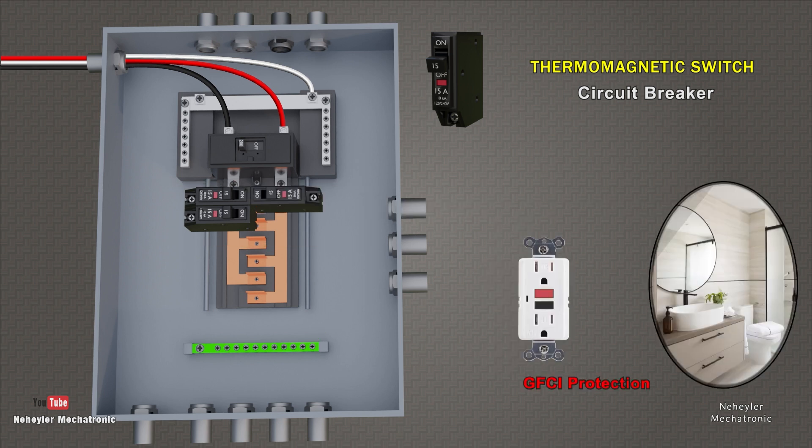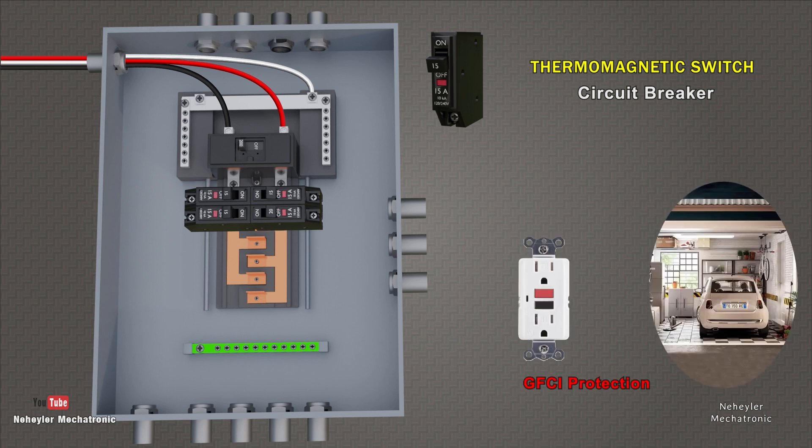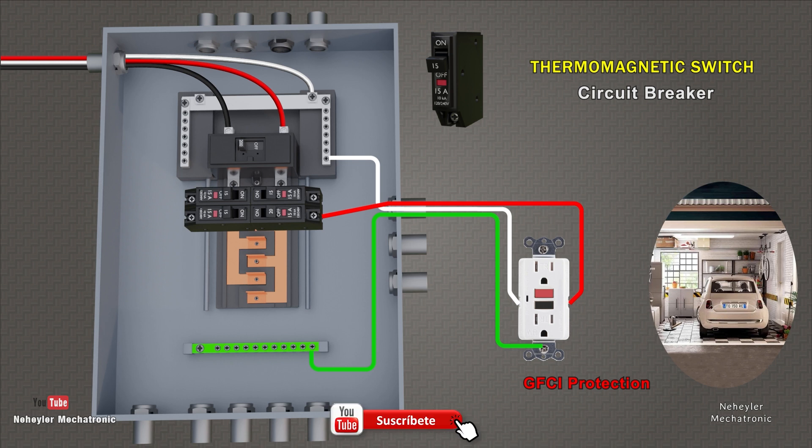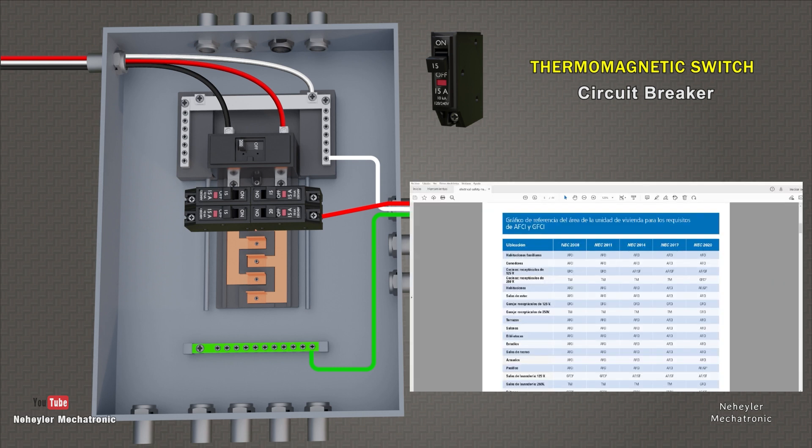Also, a circuit for bathroom contacts or outlets will be considered. We must take into account that these elements have GFCI protection, that is, against current leakage to ground. The breaker could also have this protection. Another breaker would also be used for the garage part, which should consider a GFCI protected outlet. Previously this was not considered, but according to the current code 2020 it is considered. In the video description, I am going to leave you the reference table with the protection requirements for each part of the home.